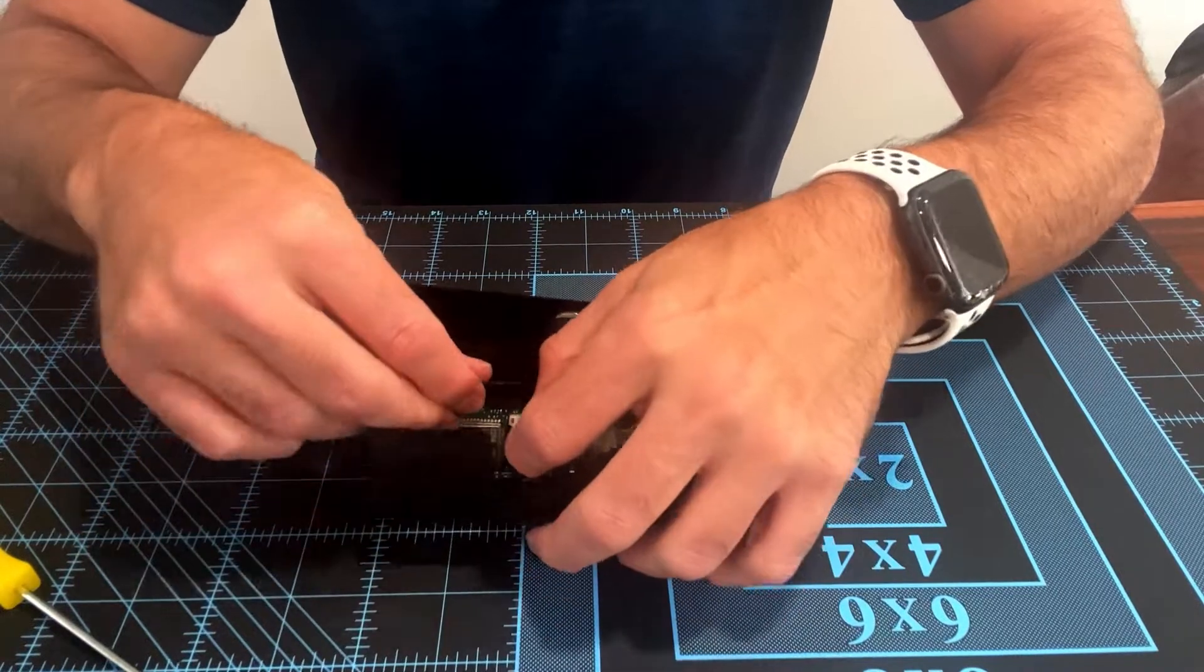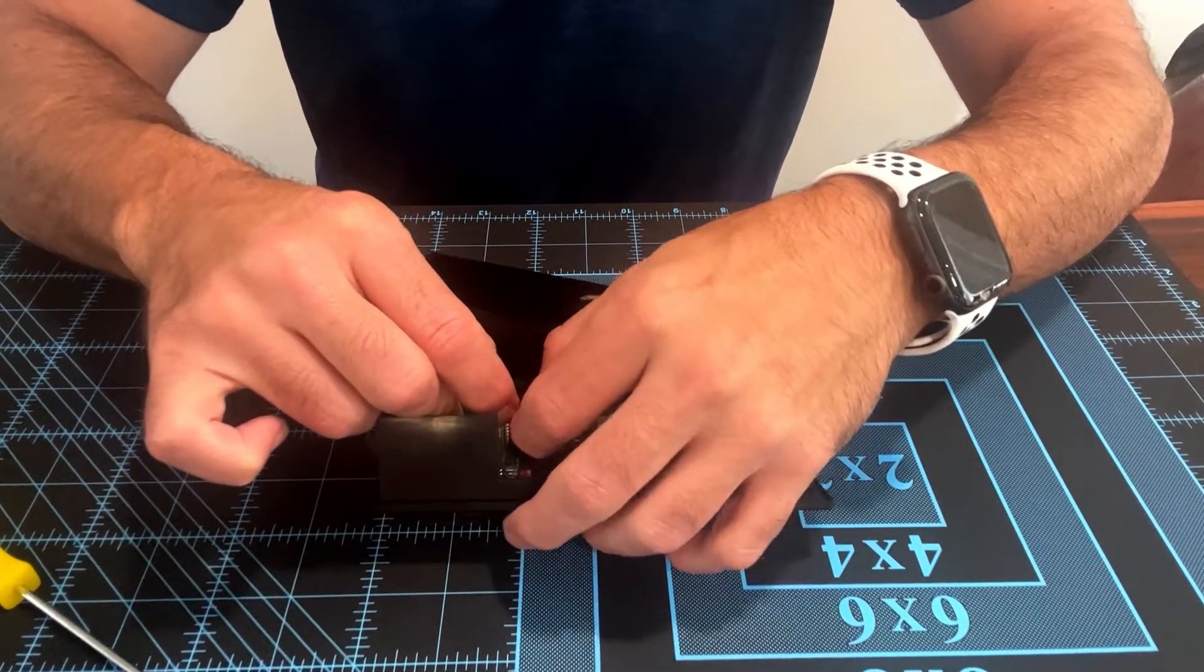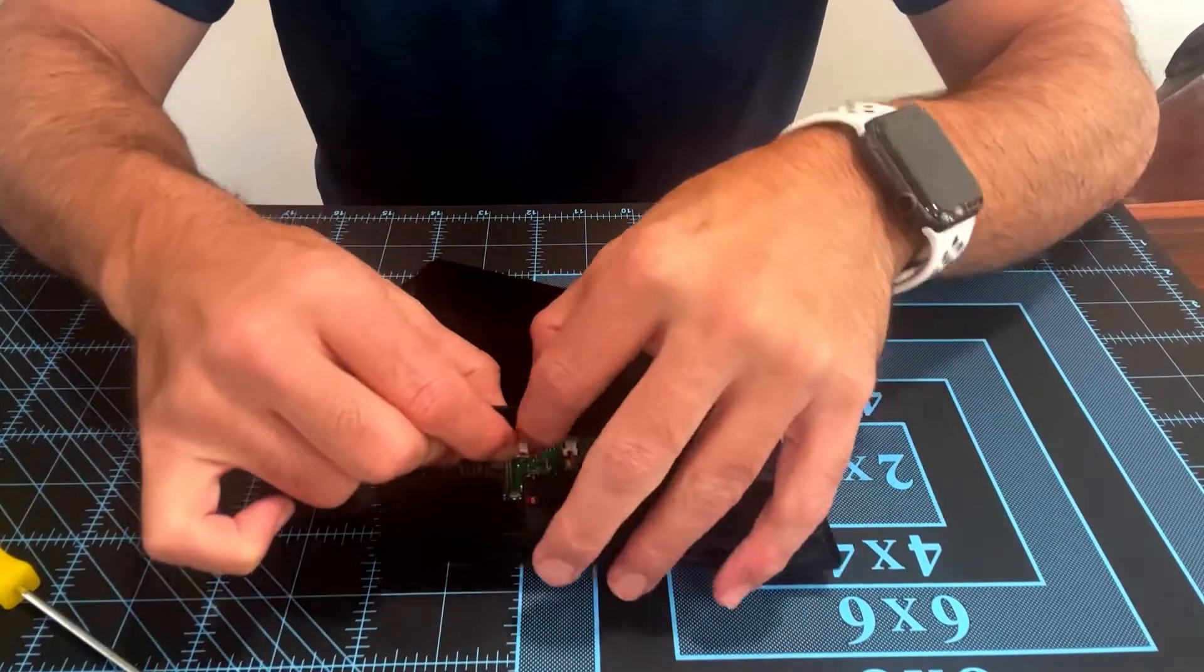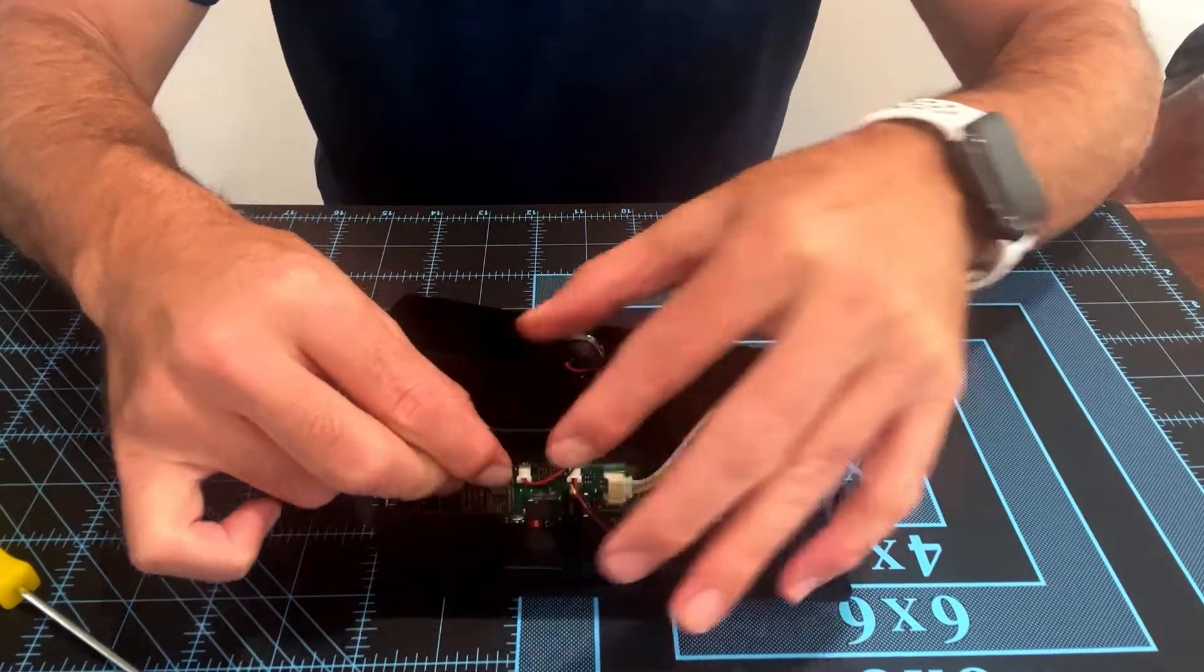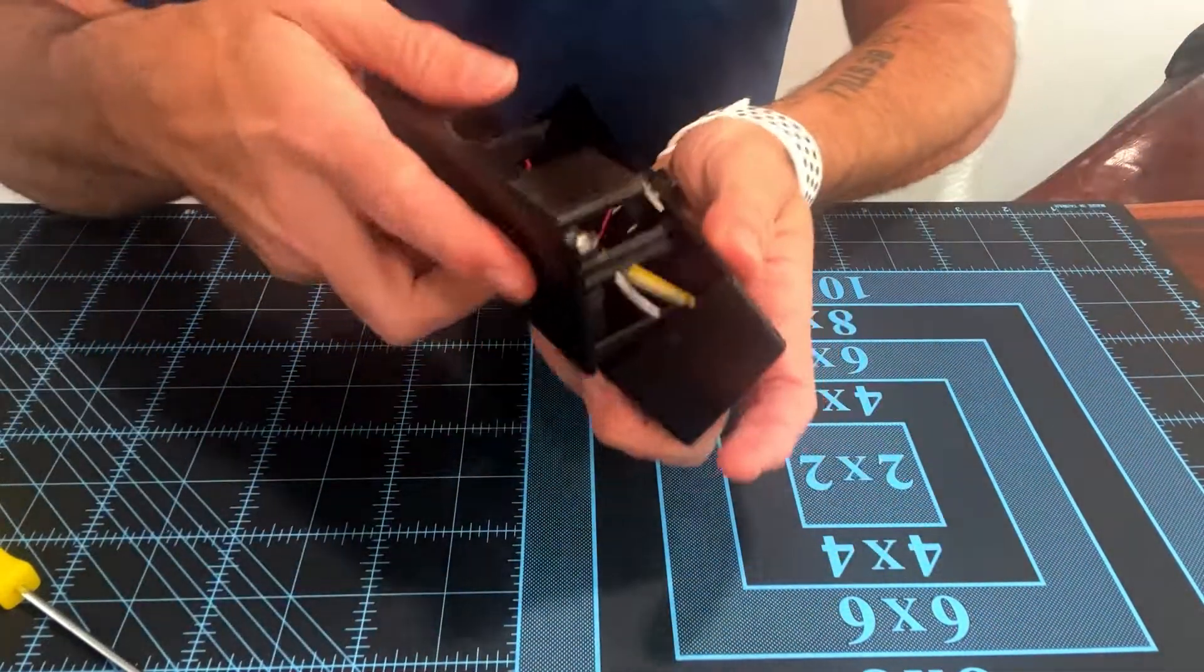And the same thing—the side with the bump out goes towards you, and we're going to push that in. Here you can just slide the two halves back together.